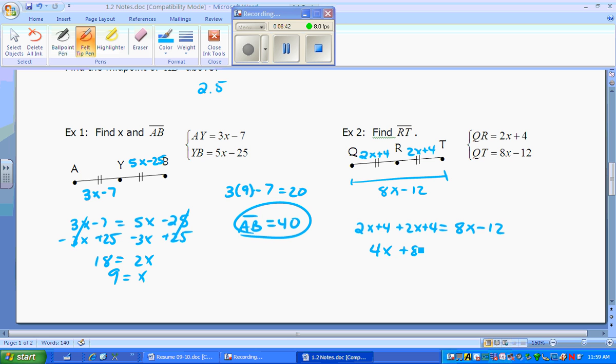So we have 2X plus 4 plus 2X plus 4. Set it equal to 8X minus 12. Simplify, 4X plus 8 is equal to 8X minus 12. Subtract the 4X over. Add 12 the opposite way. 20 is equal to 4X. So X ends up equaling 5 when you divide. And now we can get the length of RT because RT is 2X plus 4 because we know it's the same as QR. So 2 times the 5 plus the 4, RT equals 14.